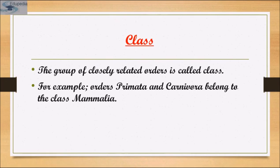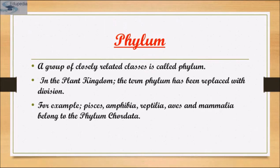Class includes related orders. For example, order Primata comprising monkeys, gorillas and gibbons is placed in class Mammalia along with order Carnivora, which includes animals like tiger, cat and dog. Phylum is the next higher category — classes comprising animals like fishes, amphibians, reptiles, birds and mammals constitute phylum. Based on common features like presence of notochord and dorsal hollow neural system, they are included in phylum Chordata.